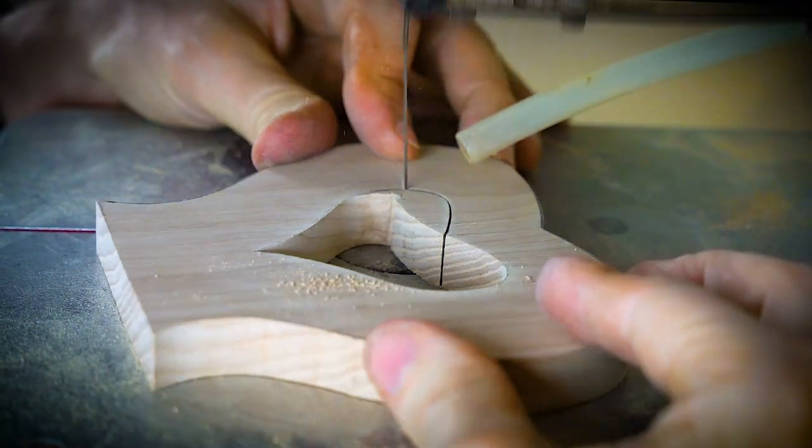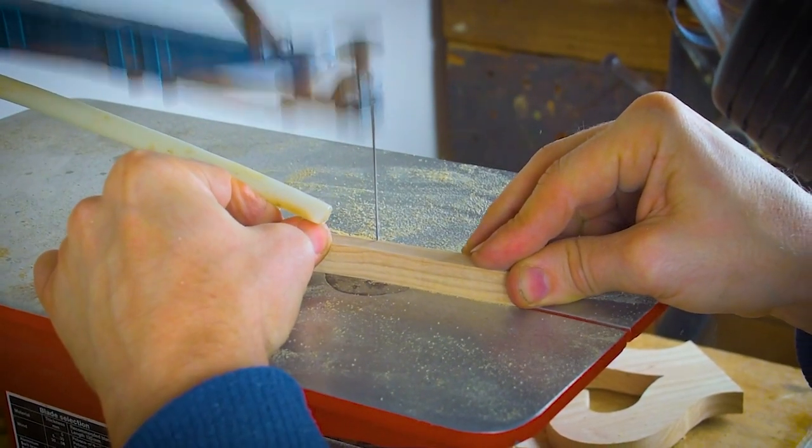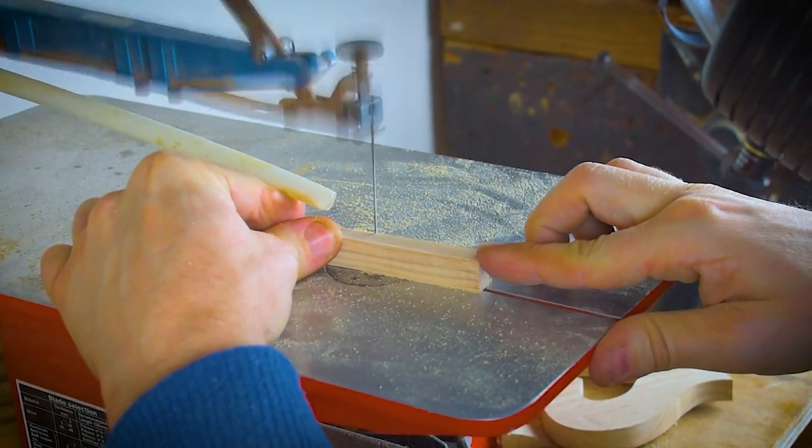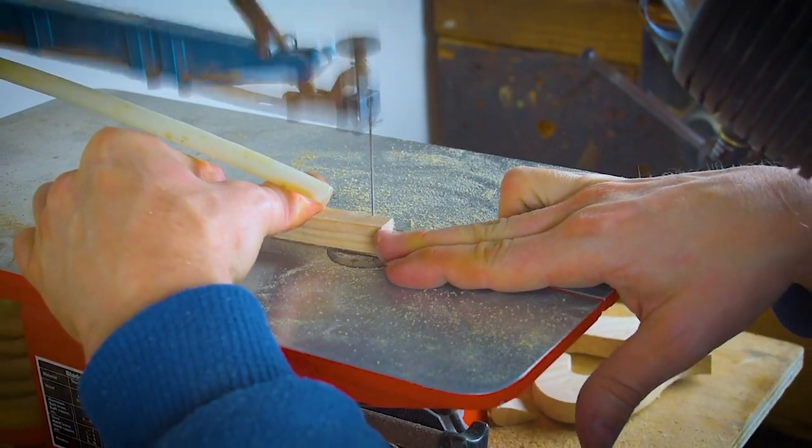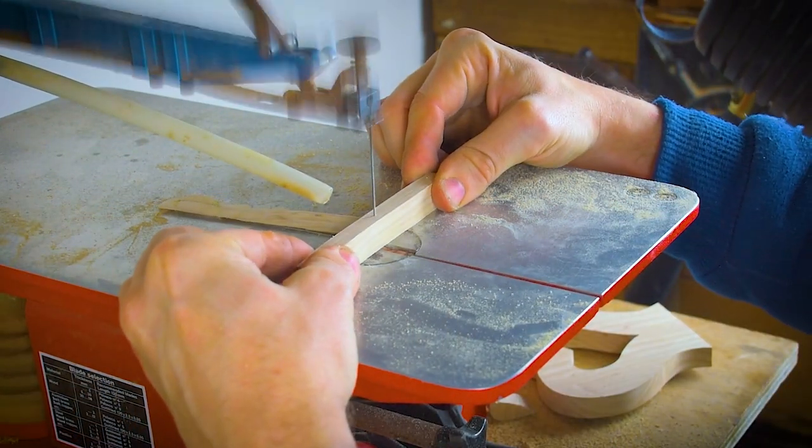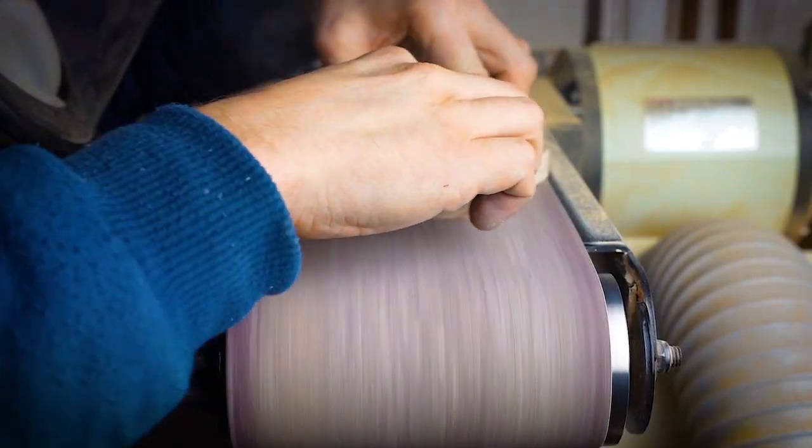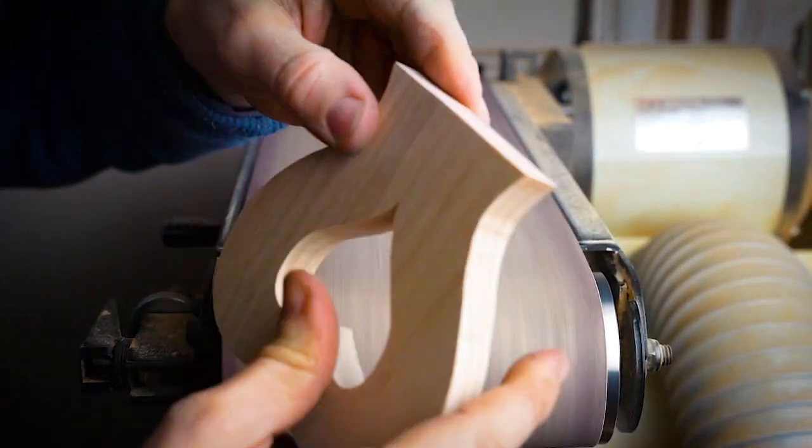Once you have finished cutting out your picture frame on the scroll saw, we then make a little base that we can attach to the picture frame. This just makes the base a little bit thicker and makes it easier for you to stand your picture frame up.